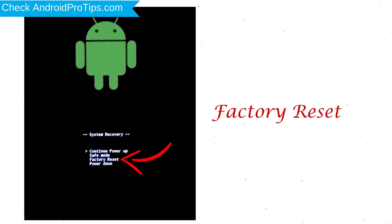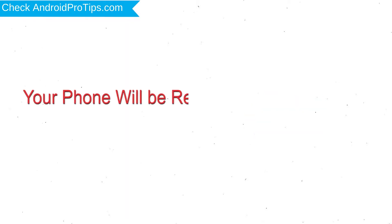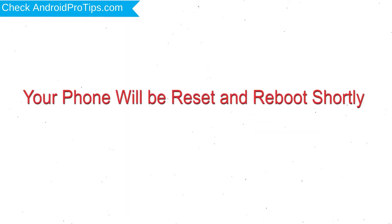When you see the Recovery Mode screen, release all the buttons. Select Factory Reset and confirm with the Power button. Finally, choose the Yes option. Your phone will be reset and reboot shortly.